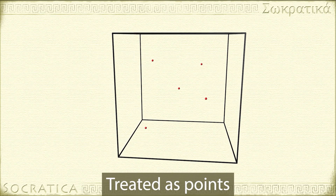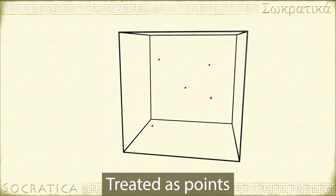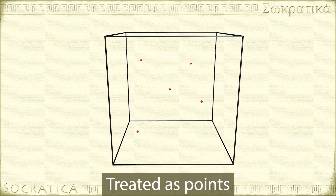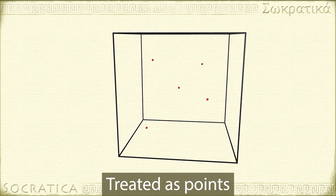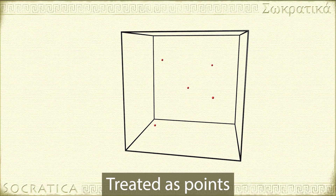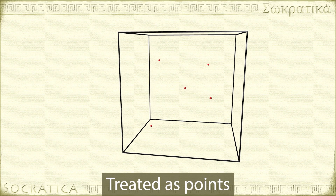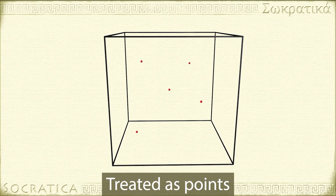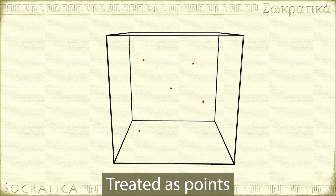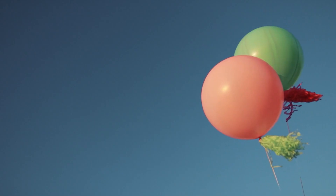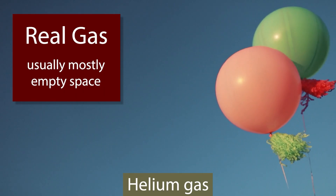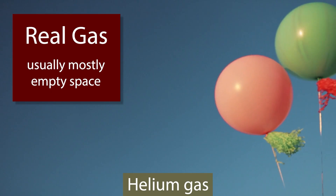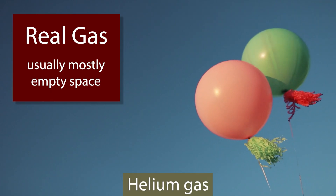That's weird and not based in reality, but it makes the math much simpler. And most of the time it's basically true — the particles of gas take up a negligible amount of space compared to the entire volume a gas is occupying. Picture a helium balloon: it's mostly empty space, not solid helium. So we can get away with this assumption.